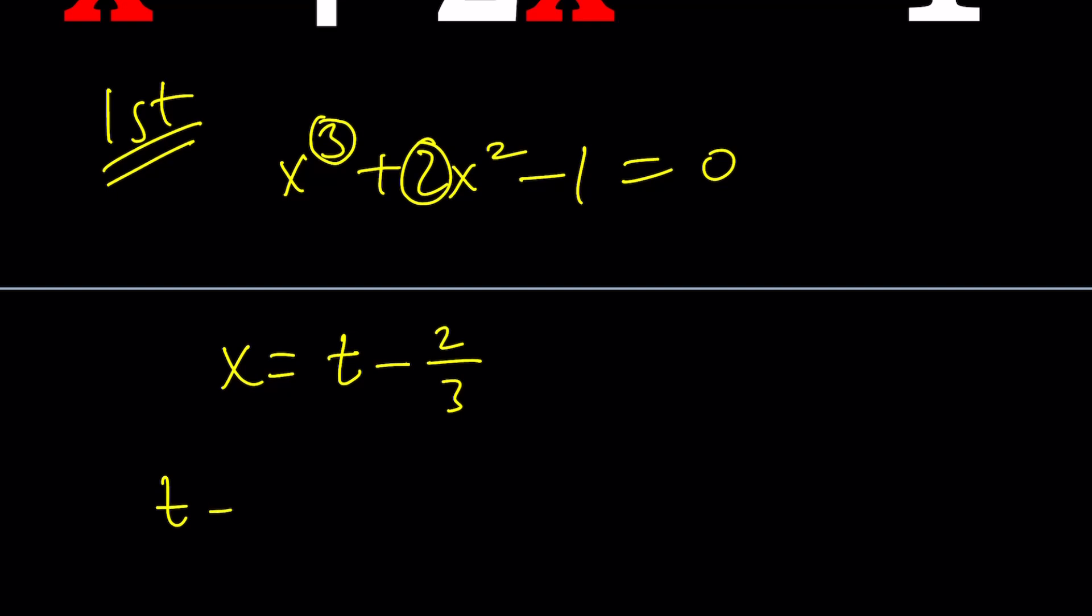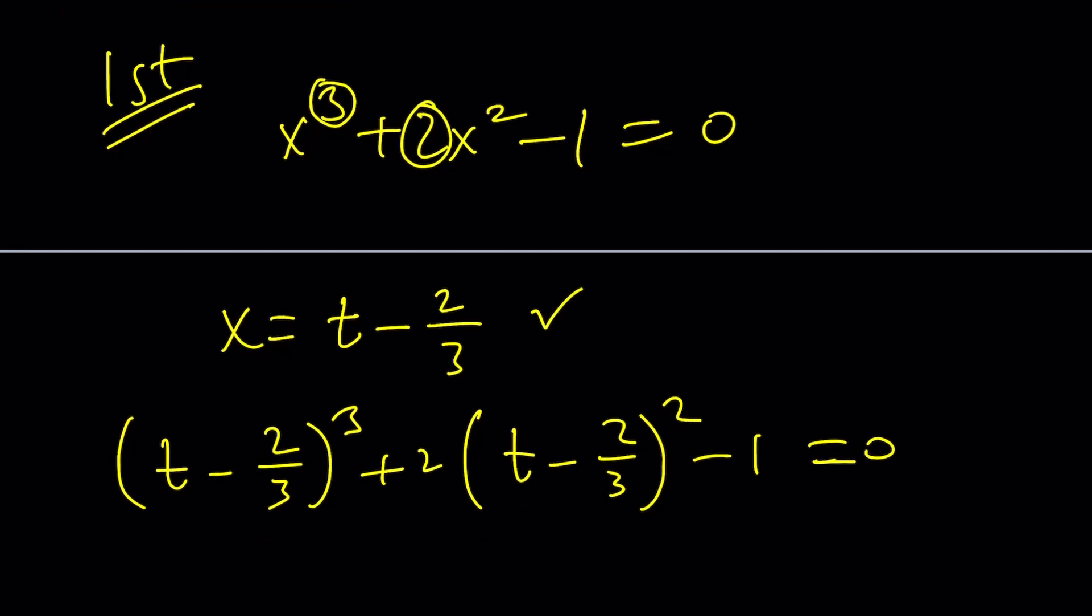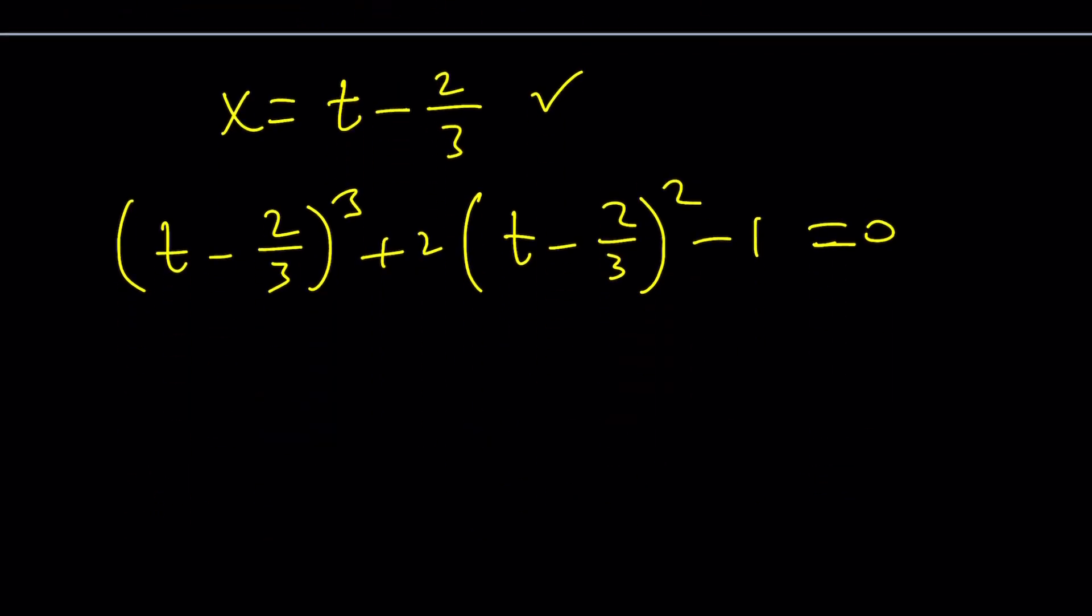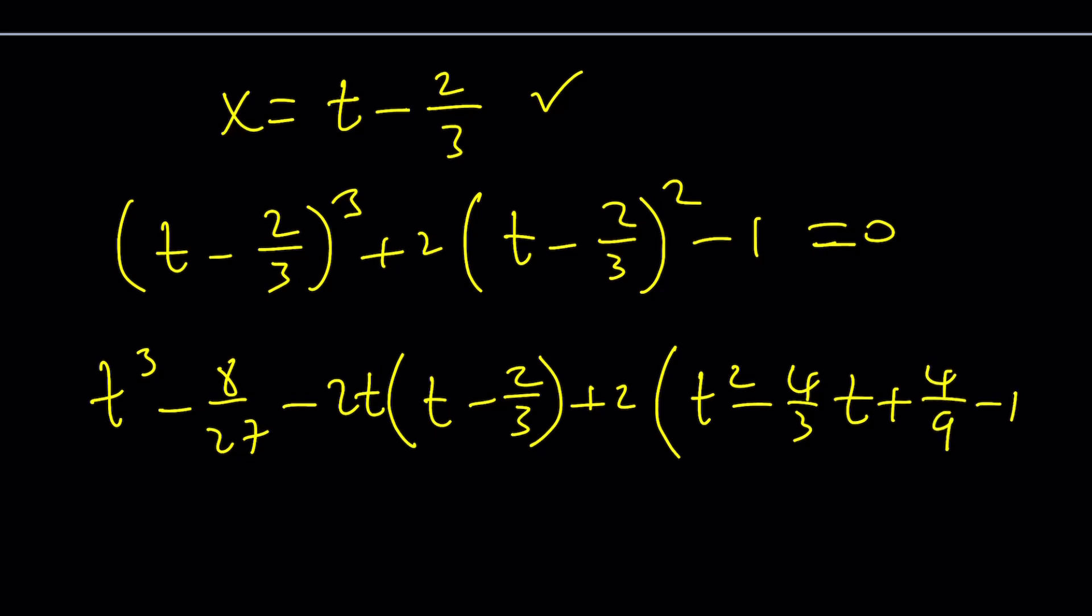And if you do that, you're going to get something like this: t minus 2 thirds to the third plus 2 times t minus 2 thirds squared minus 1 equals 0. This is just t and now you can solve for t and then go back to x. When you expand something like this, you get a cubed minus b cubed, 8 over 27 minus 3ab is going to be 2t times a minus b. I just used a shortcut. You don't have to. This is going to be 4 over 3t plus 4 ninths minus 1. And of course, 2 is only multiplying this part equals 0.